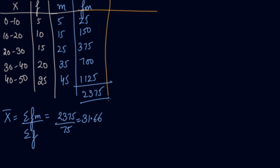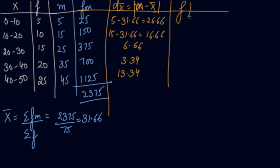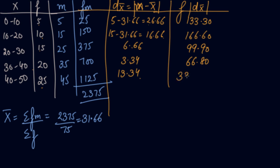Now you have to find out the deviation from mean. |x minus x̄| — since x is in continuous series, you take the mid values. So: 5 minus 31.66 gives 26.66; then mid value 15 minus 31.66 gives 16.66; then 6.66; then 3.34; then 13.34. Now you will multiply these deviations with the frequency. So multiplying gives: 133.30, 166.60, 99.90, 66.80, 333.50.